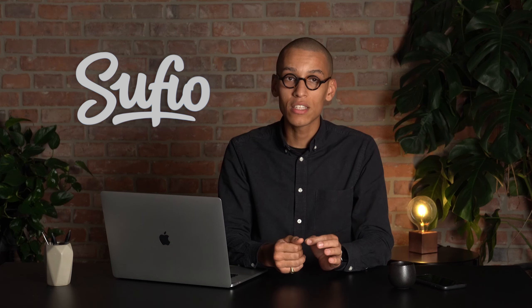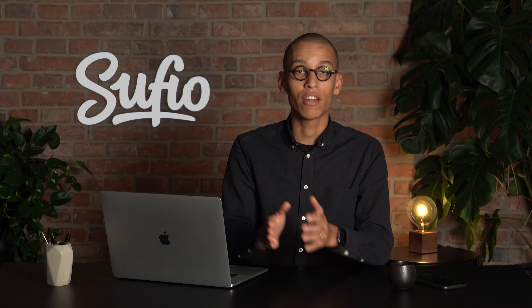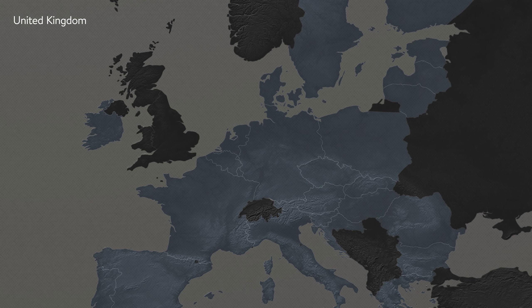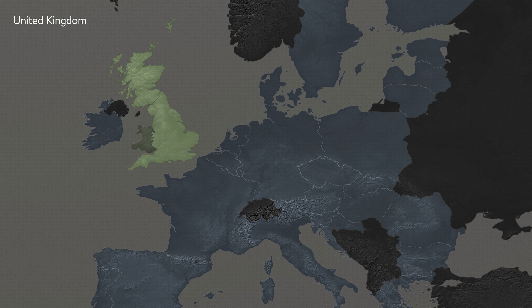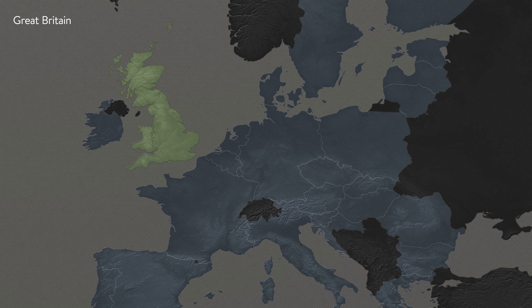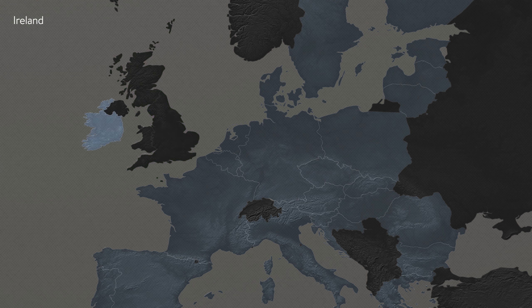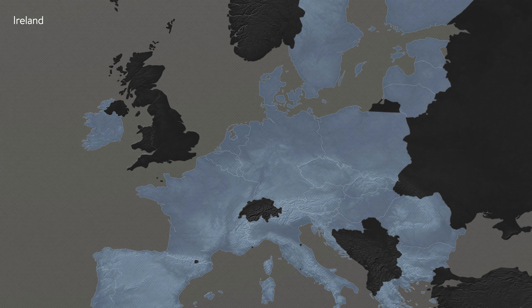First, let's start with the basics — the difference between the UK and Great Britain. The UK is made up of four countries: England, Scotland, Wales and Northern Ireland. On the other hand, Great Britain refers just to England, Scotland and Wales. Be careful not to mistake Ireland for being part of the UK. It is part of the EU and therefore follows EU VAT rules.